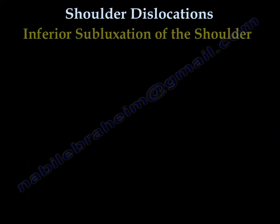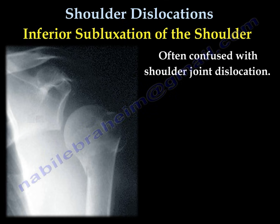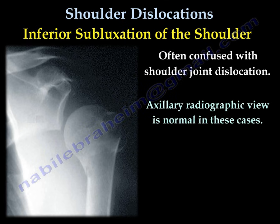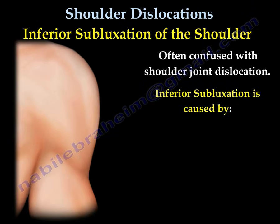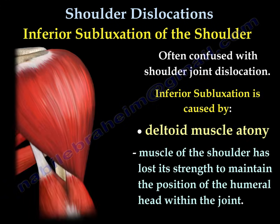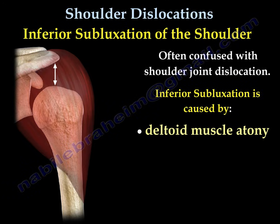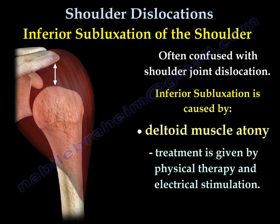Inferior subluxation of the shoulder is often confused with shoulder joint dislocation. Axillary radiograph views are normal in these patients. Inferior subluxation of the shoulder is usually caused by deltoid muscle atony — weakness of the deltoid muscle. The treatment is usually physiotherapy and electric stimulation.